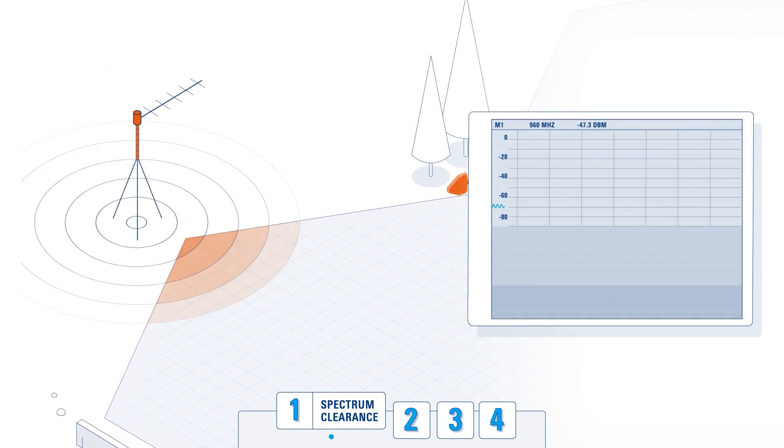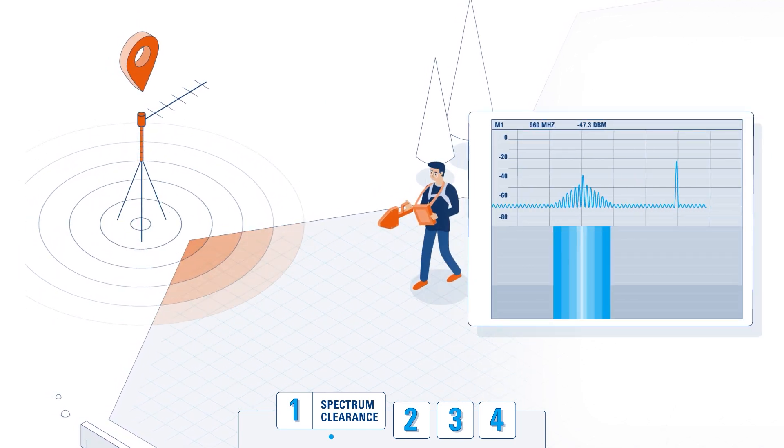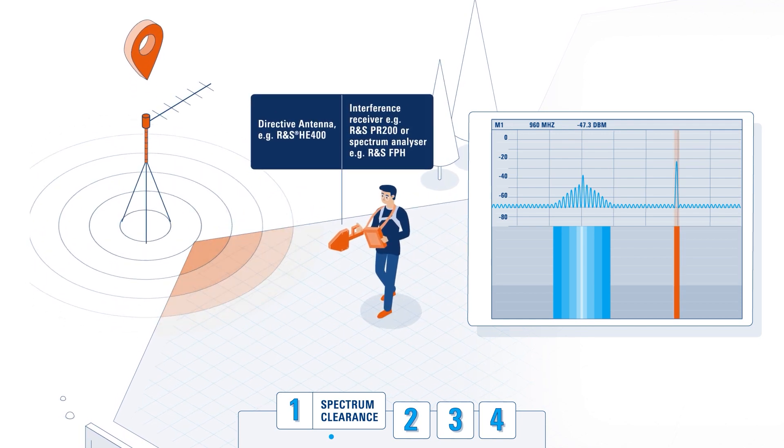The next step is to locate the sources of the interfering signals. These sources can then be switched off or reported to a regulator.